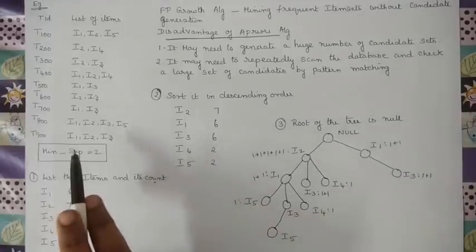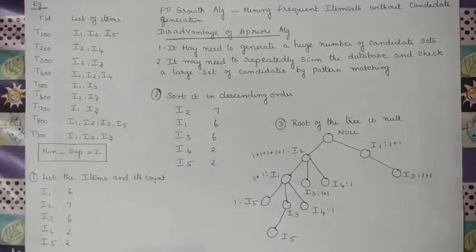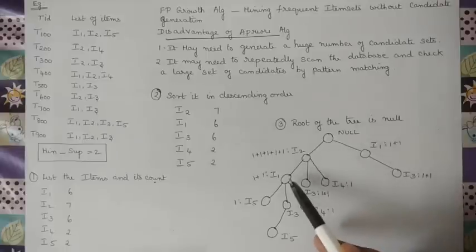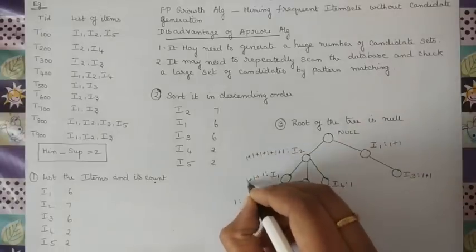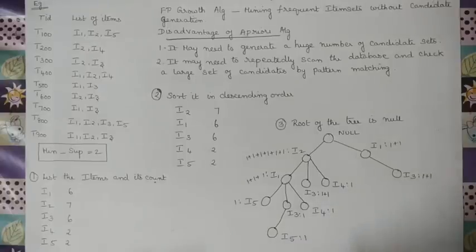Transaction 8 is I1, I2, I3, I5 — arranged in descending order as I2, I1, I3, I5. Following the tree, I2 gets plus 1, I1 gets plus 1, and I3 and I5 are added with count 1 each along this path.